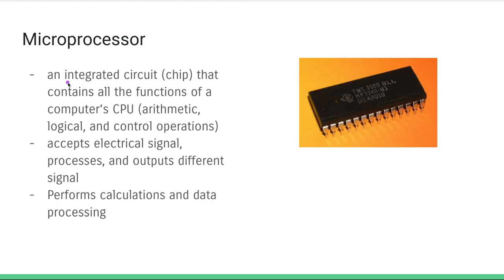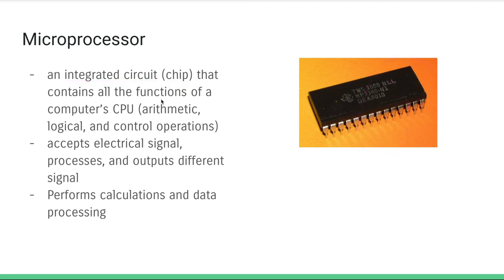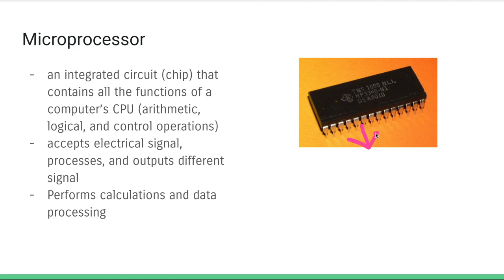A microprocessor is an integrated circuit — basically just a chip. It contains all the functions of a computer CPU, so think about an ALU: arithmetic, logical, and control operations. Generally, it accepts electrical signals on one side and outputs from another side, and its role more broadly is to perform calculations and data processing.